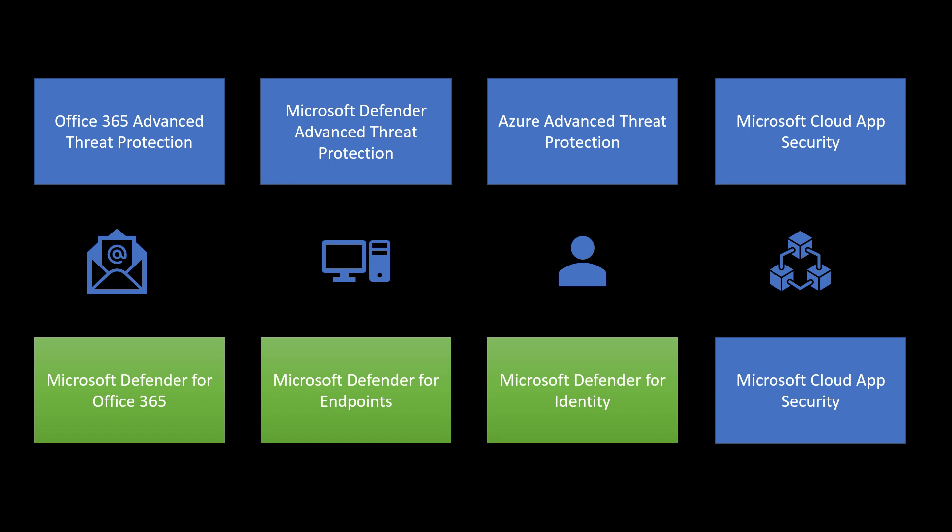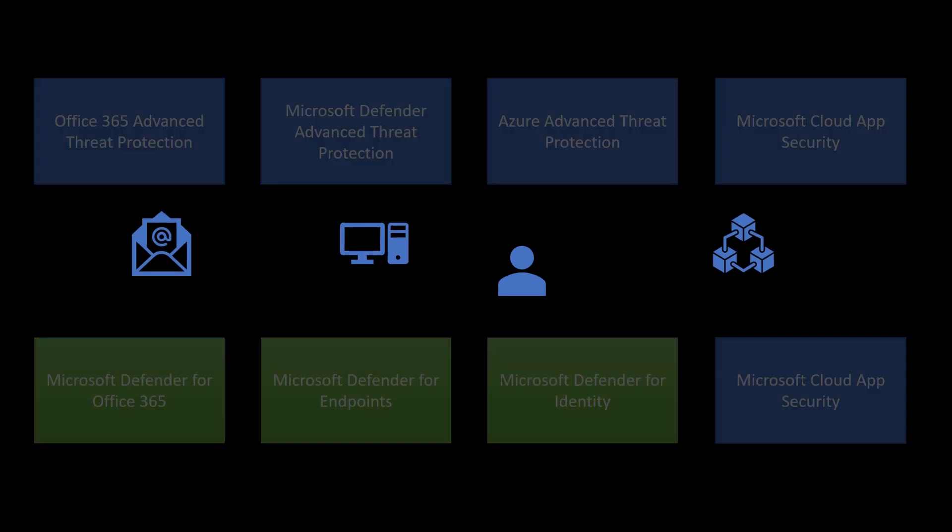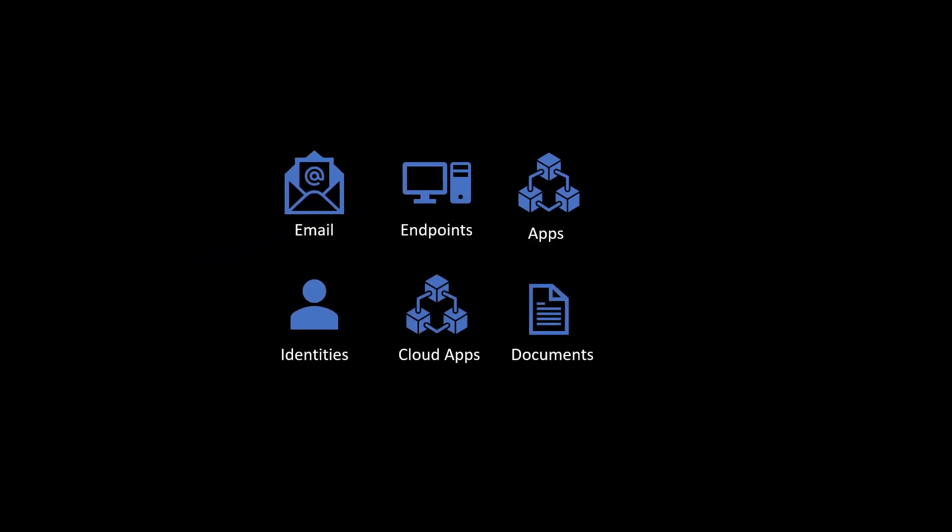All these security solutions are licensed-based. They typically come with either EMS E5, M365 E5 Security, or M365 E5 Compliance — these are the different license SKUs available. The moment you procure any of these licenses, you can go ahead and deploy these security solutions to protect a specific digital state. There is one more digital state — documents and data — which is also part of Microsoft Compliance solutions.